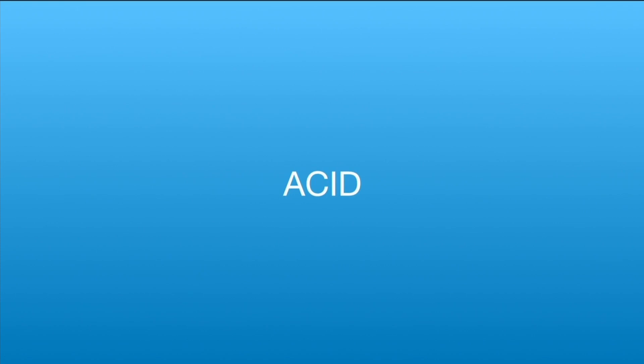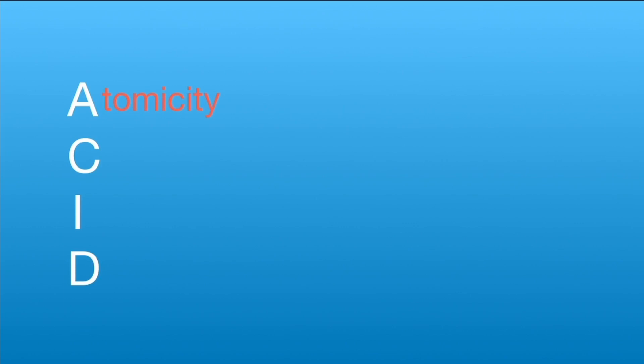To understand about transactions we have to understand the ACID properties. ACID is an acronym where A stands for Atomicity, C stands for Consistency, I stands for Isolation, and D stands for Durability. Atomicity specifies that the transaction must be atomic in nature — it will be executed as one entity and rolled back as one entity.